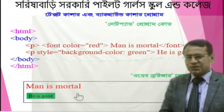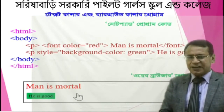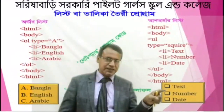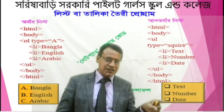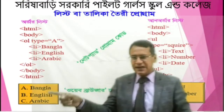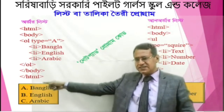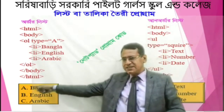This is the color, and the other one is the square. This is the unordered list. This is the ordered list — A, B, C, D.